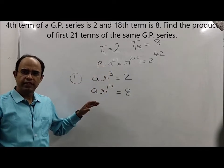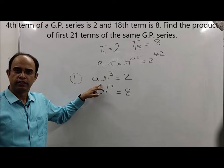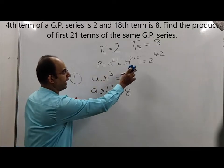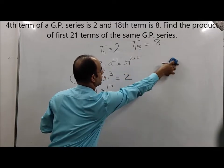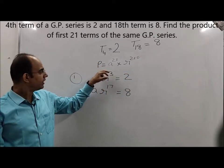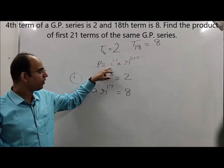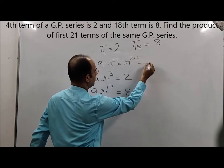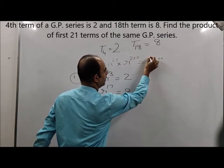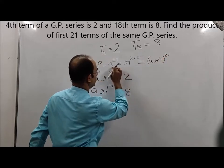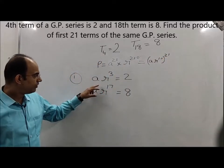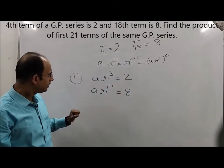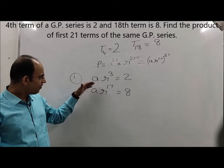Now for the second method. It's not always necessary to divide the two equations. You need to look at what exactly the question asks. You need to find a²¹ · r²¹⁰, which can also be written as (a·r¹⁰)²¹. So can we find the value of a·r¹⁰ using these two equations? Instead of dividing, let us try multiplying them.